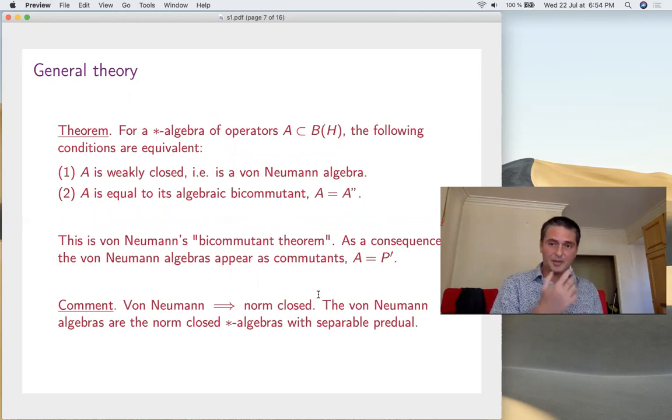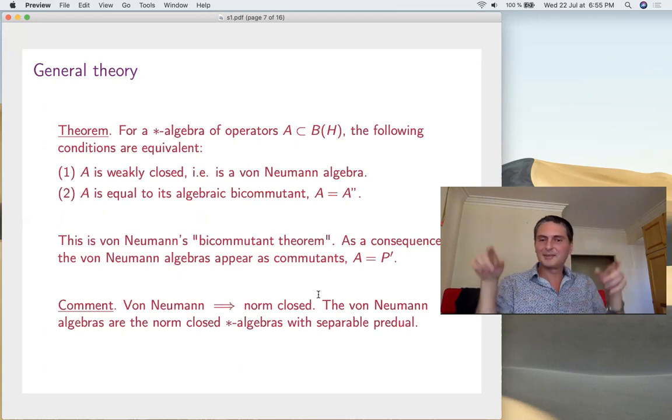The first thing, due to von Neumann, is that the fact of being weakly closed is equivalent to being equal to the bicommutant. What do we mean by this? A, you can take its commutant inside B(H), and then the commutant of the commutant. A is, of course, included in the double commutant. Equality means that it's weakly closed. Proof: operator theory, functional analysis. Another consequence, since commutants are always equal to their bicommutants, von Neumann algebras appear as commutants. That's interesting, especially in relation with physics. Many things in von Neumann algebras appear as commutants. There are some technical comments too. Von Neumann, of course, implies norm closed, so this means it's a C*-algebra. If you know what that means, that means it's norm closed. Conversely, the von Neumann algebras, those which are weakly closed, can be located inside those which are norm closed, the C*-algebras. These are the C*-algebras having separable predual. This is very well understood, the relation between C* and von Neumann algebras.